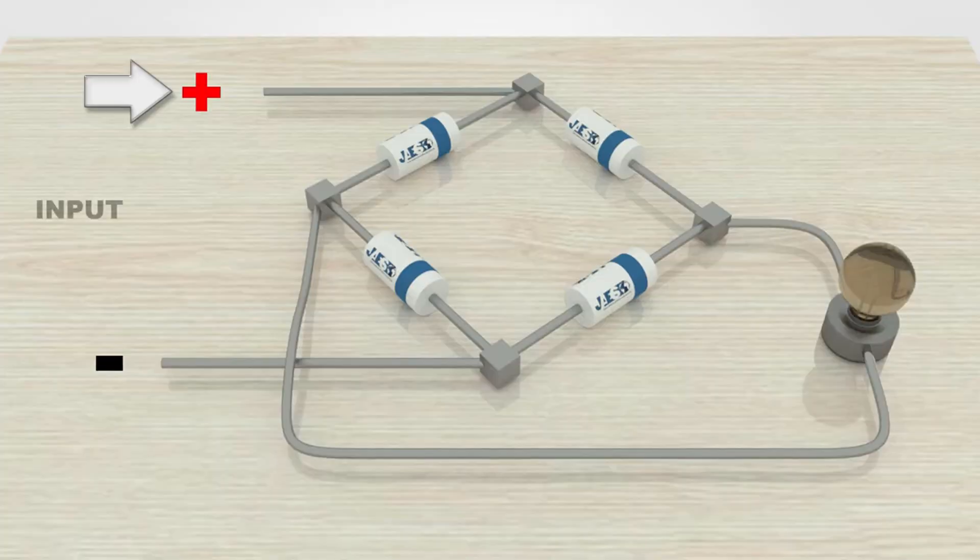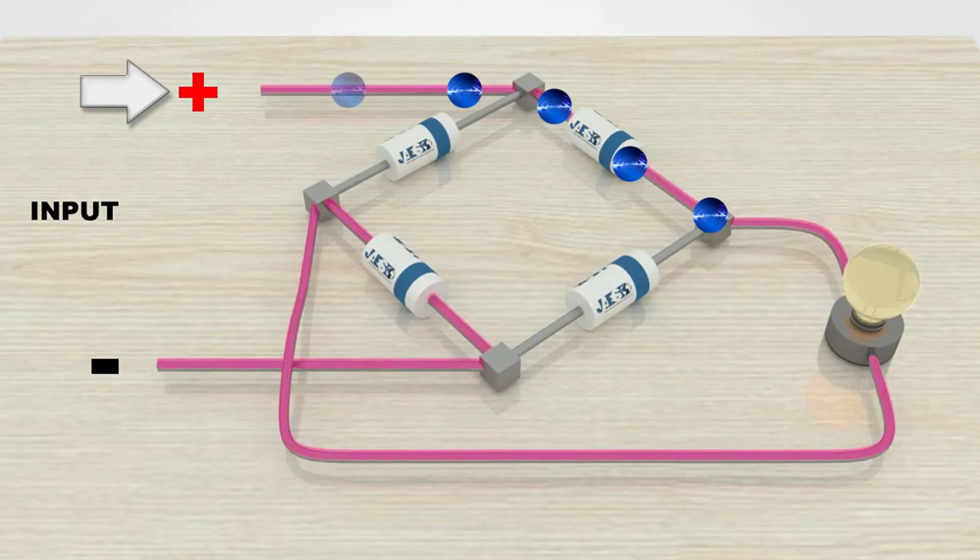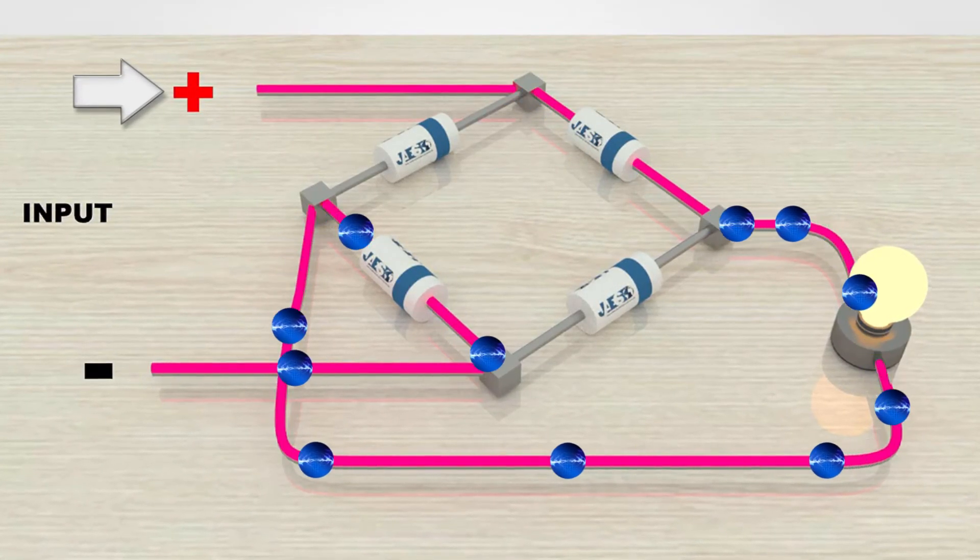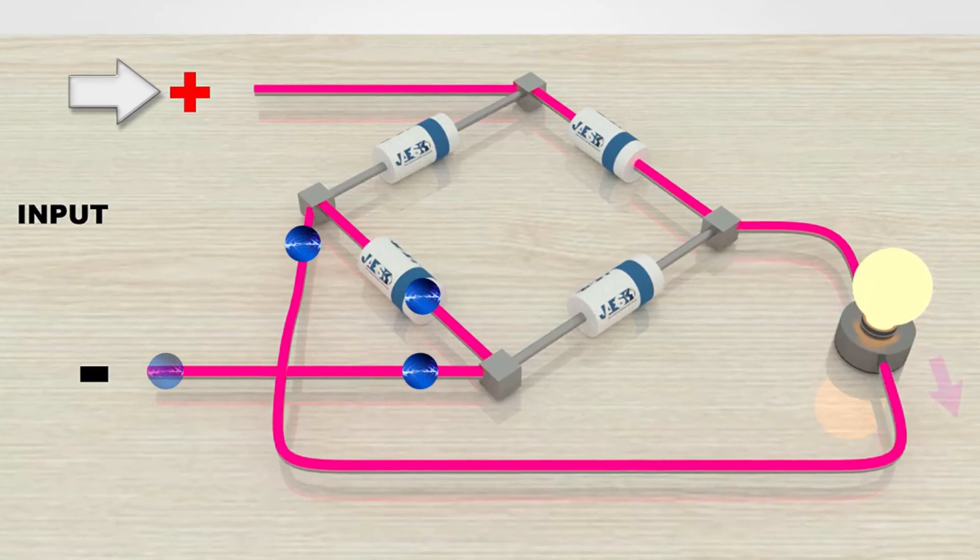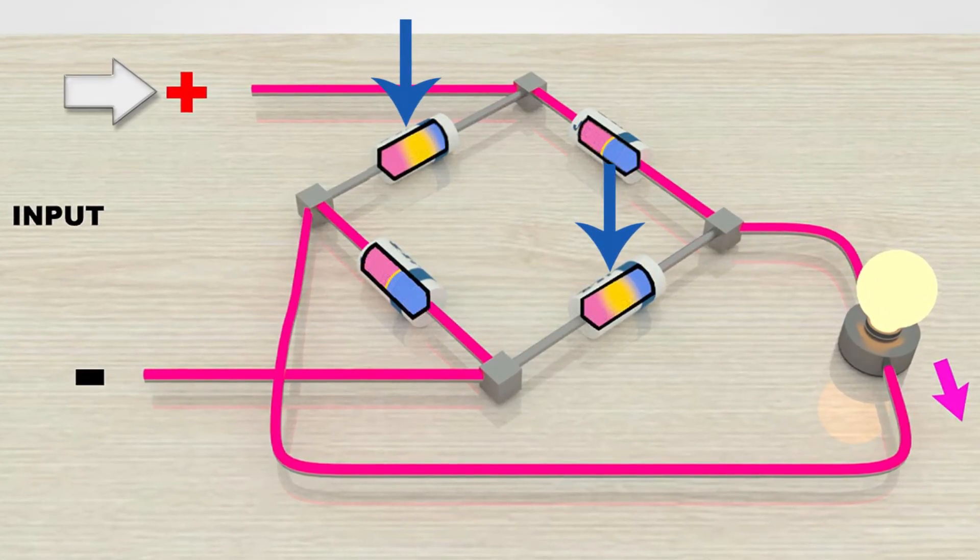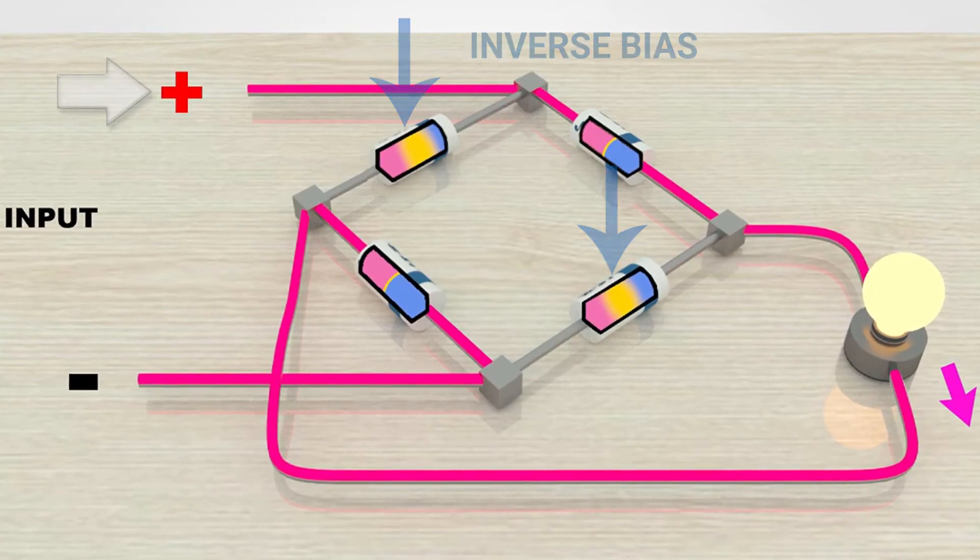In the positive half, the circuit will run the current as shown. These two diodes will find themselves in an inverse bias condition, so they will block the current flow.